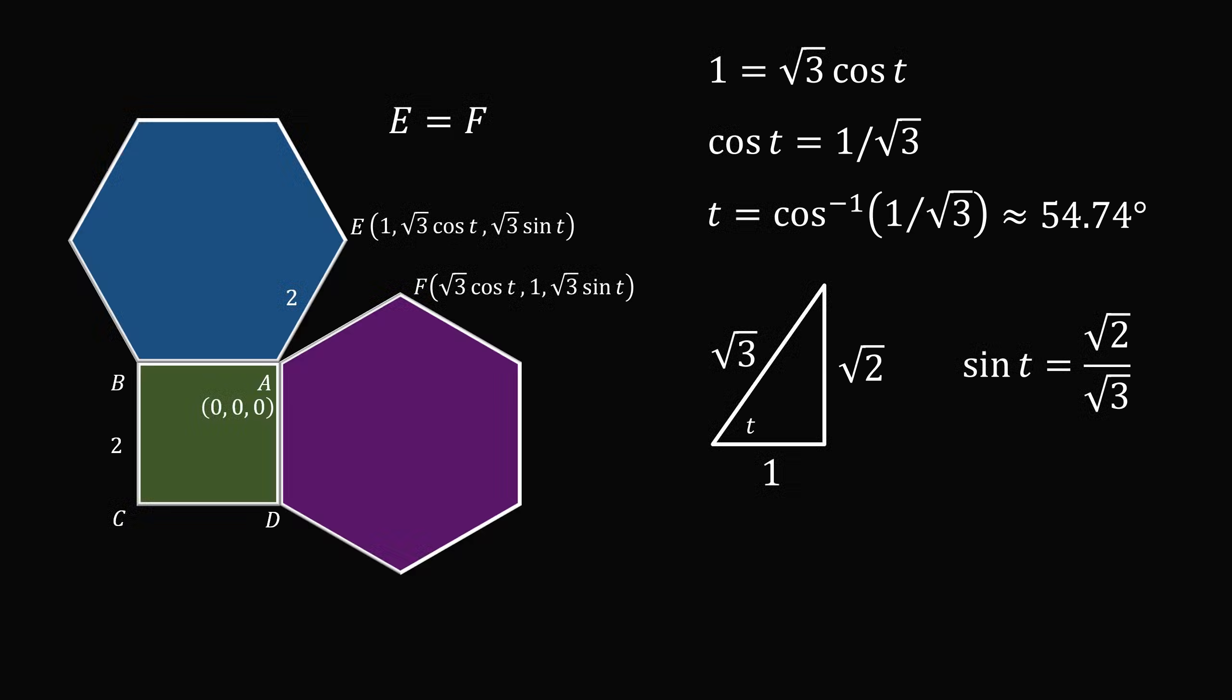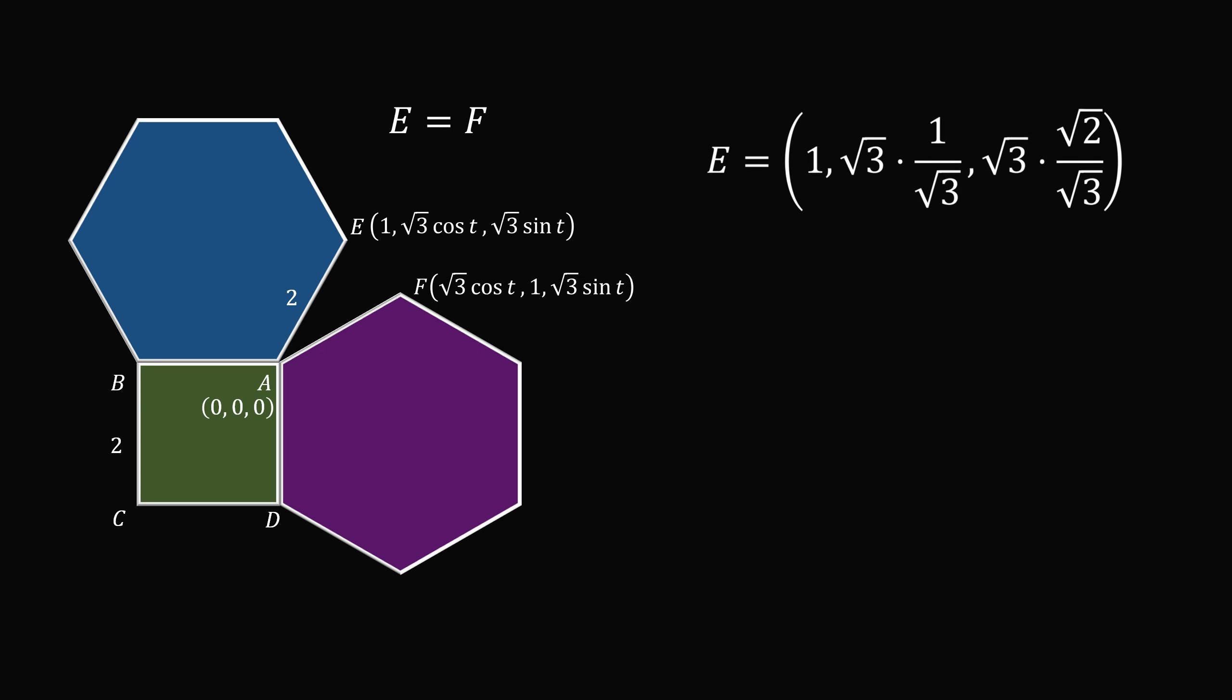We can thus substitute for sine t and cosine t in the coordinates for E. We'll now just simplify this so that E is equal to (1, 1, square root of 2).